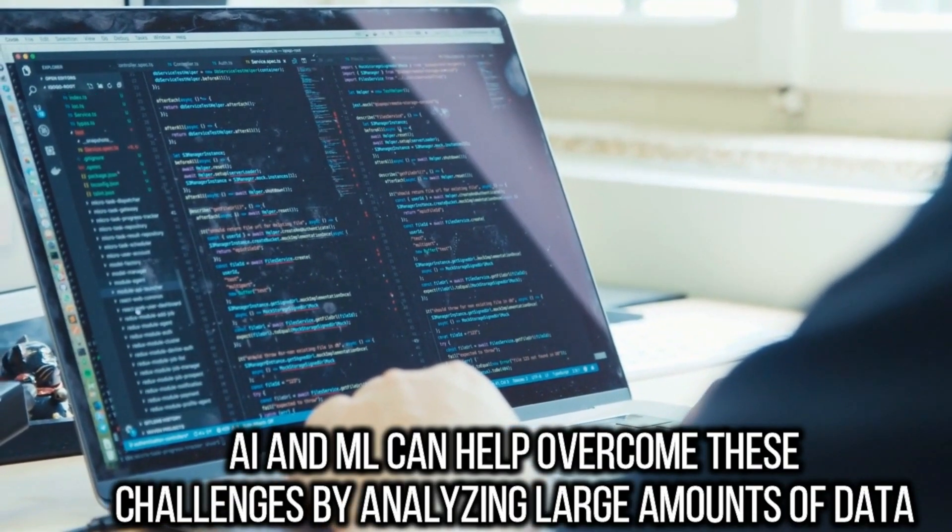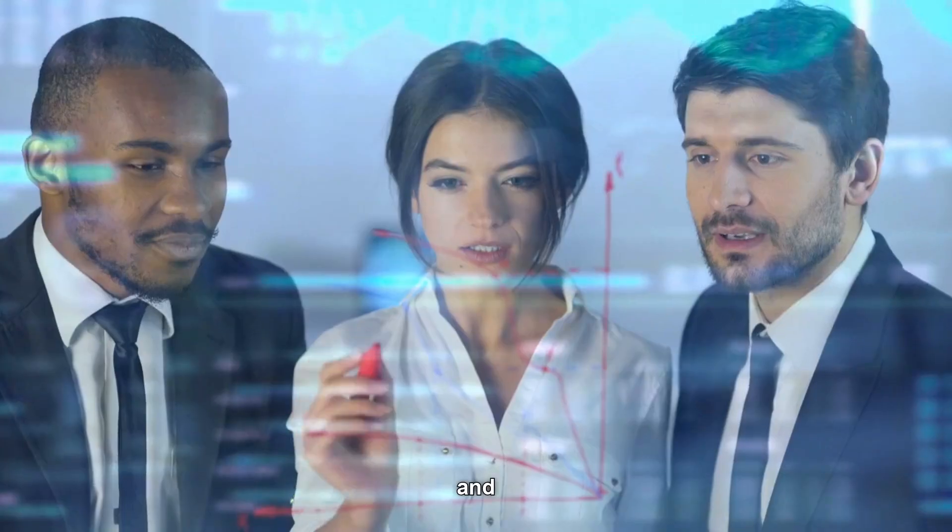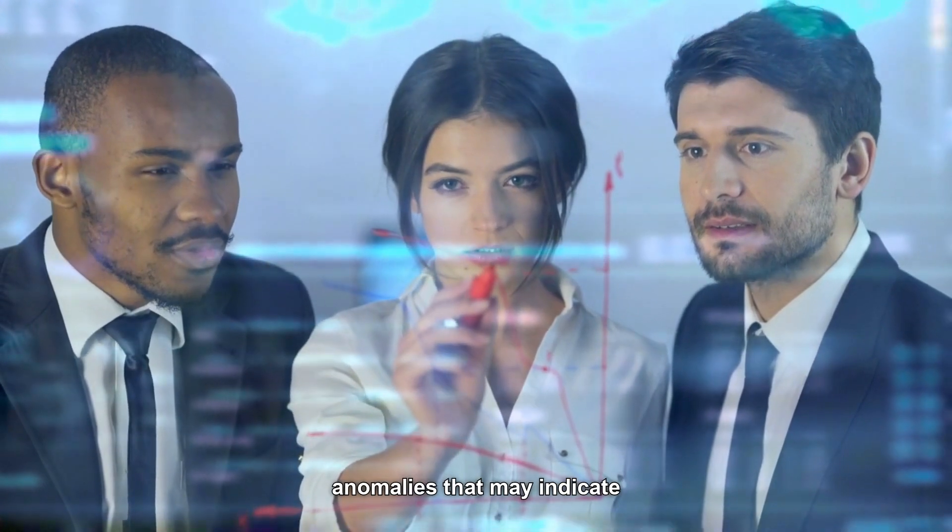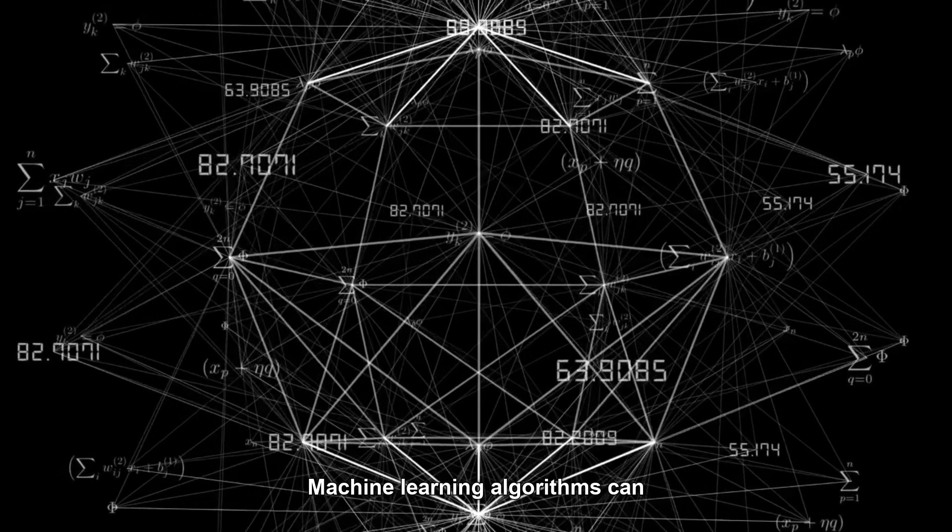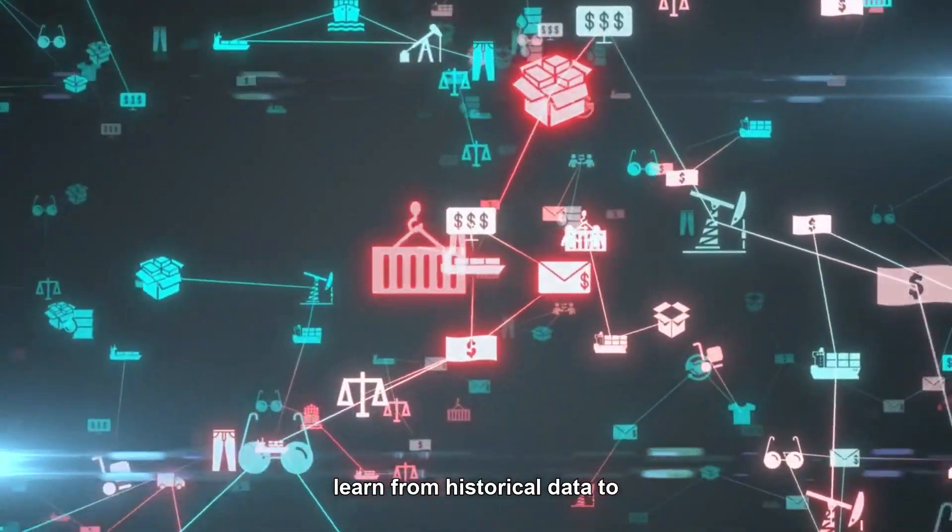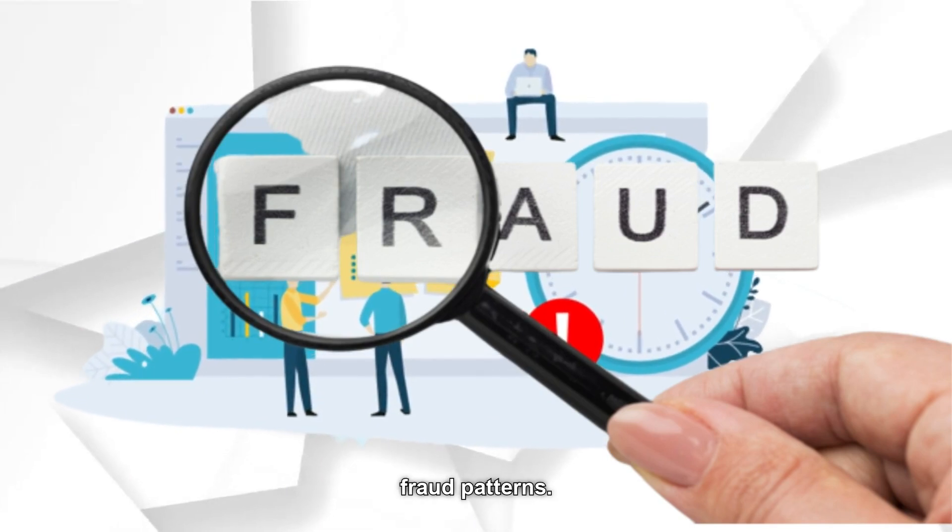AI and ML can help overcome these challenges by analyzing large amounts of data and identifying patterns and anomalies that may indicate fraudulent behavior. Machine learning algorithms can learn from historical data to identify new and emerging fraud schemes and adapt to changing fraud patterns.